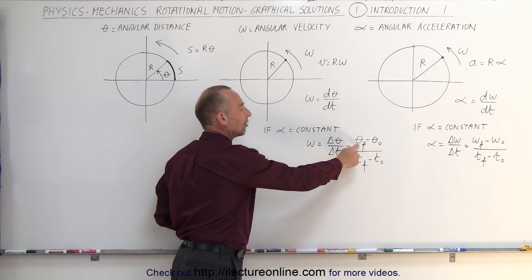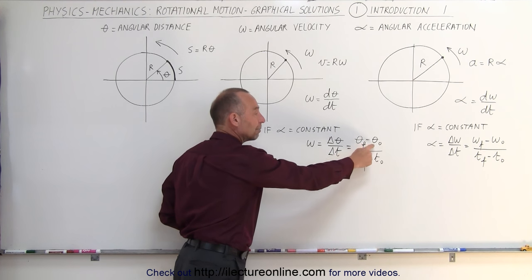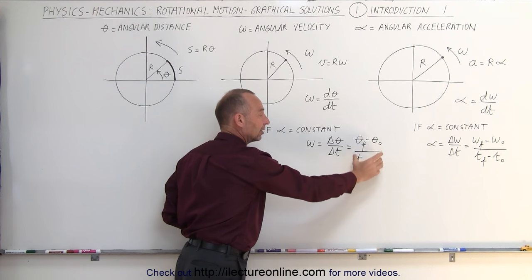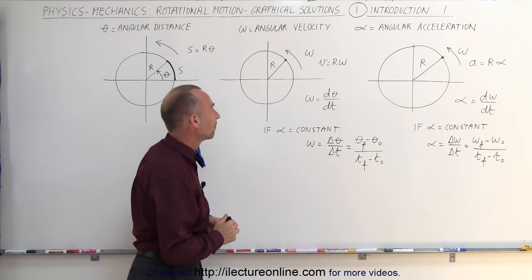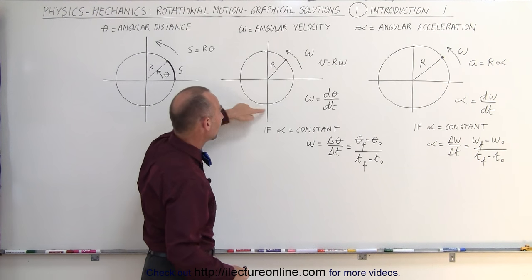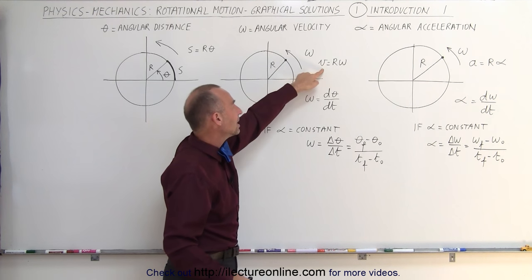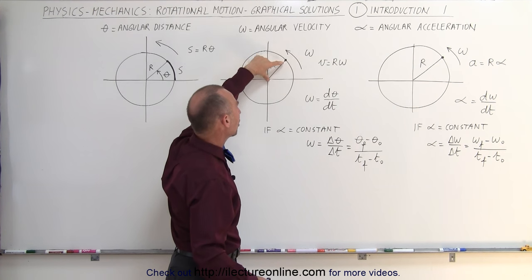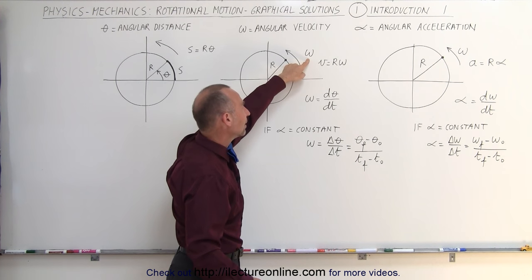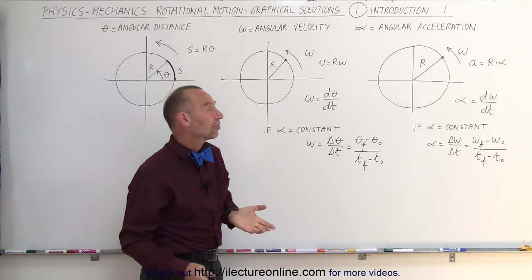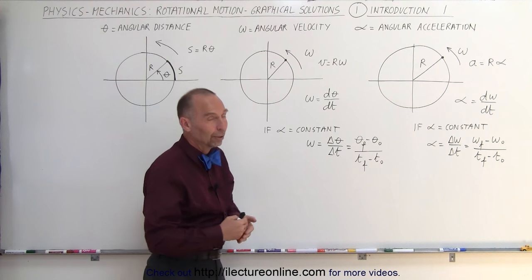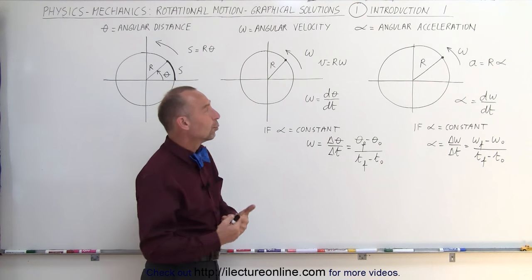or simply the final position in terms of angle minus the initial position in terms of angle divided by the time elapsed. We can again relate the tangential velocity along the circle v as simply being equal to the radius r times the angular velocity. The unit for angular velocity is radians per second. Radians is a non-unit, so it's really 1 over seconds.